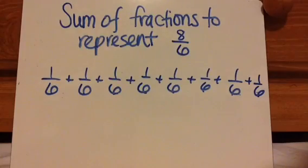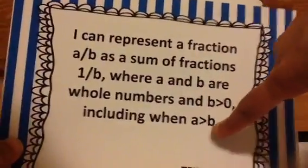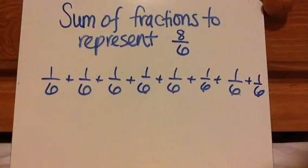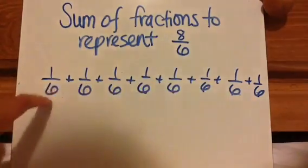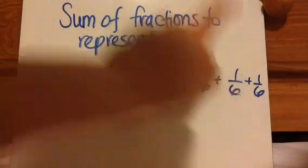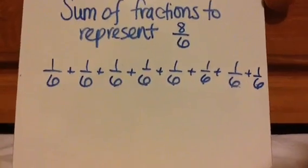Now let's talk about the second part of this standard where it says including where A is greater than B, meaning the numerator is larger than the denominator. In this situation: sum of fractions that represent 8 sixths. The easy part is you just break it into 8 one-sixths — 1 sixth plus 1 sixth plus 1 sixth plus 1 sixth plus 1 sixth plus 1 sixth plus 1 sixth plus 1 sixth — so these are 8 sixths shown as unit fractions.